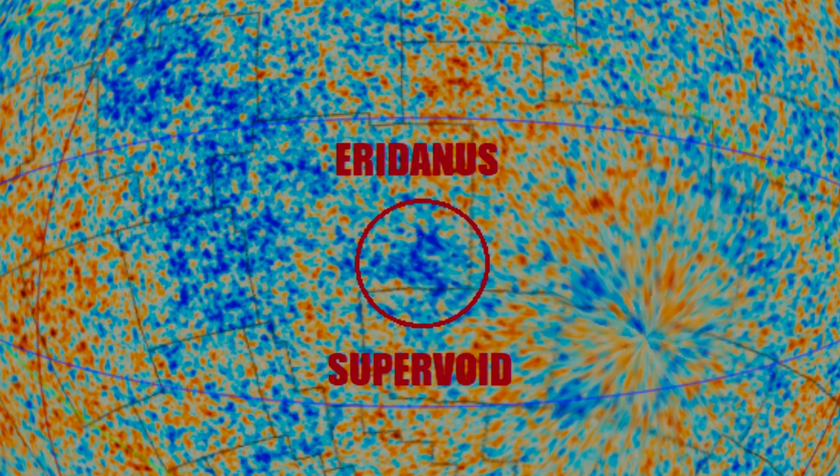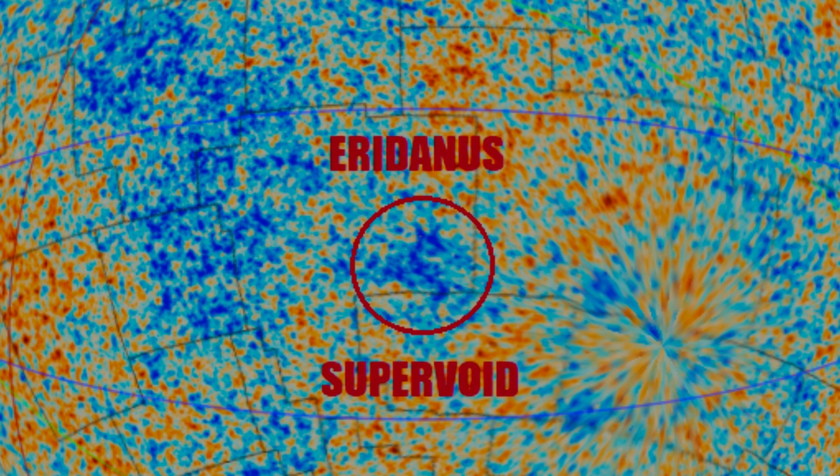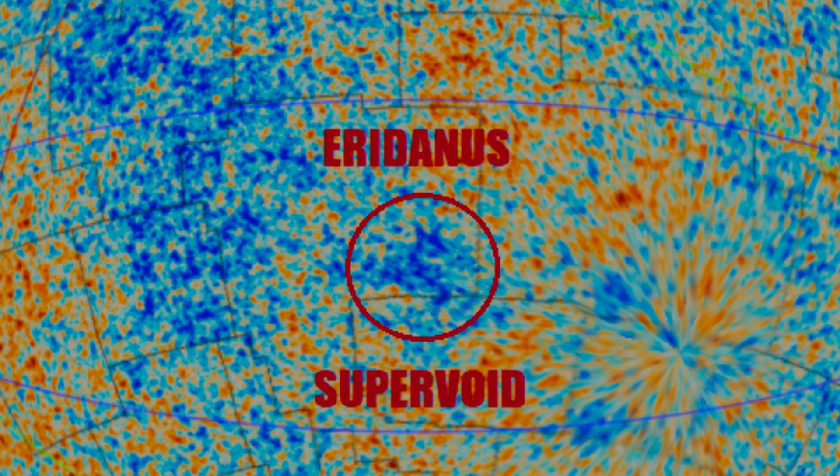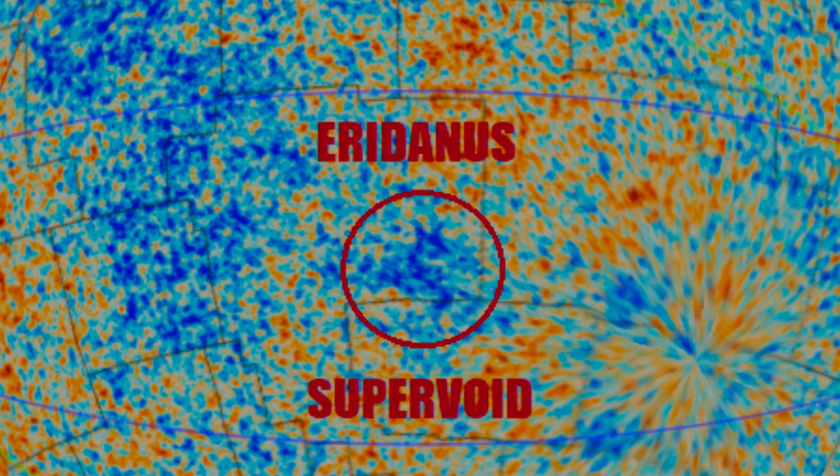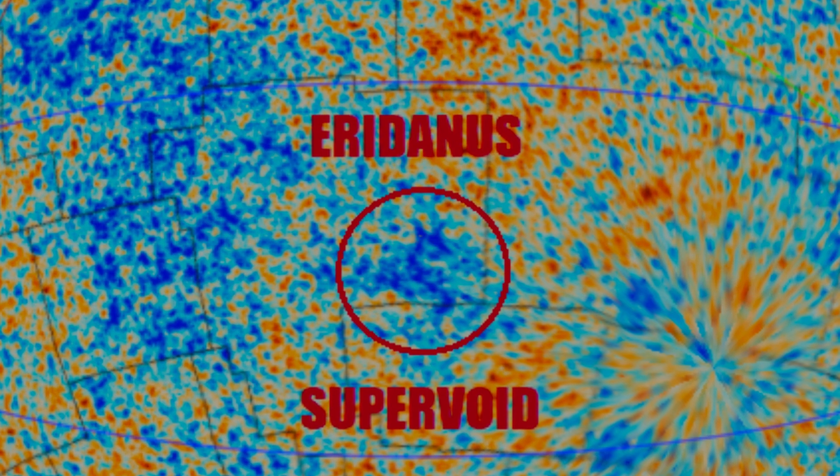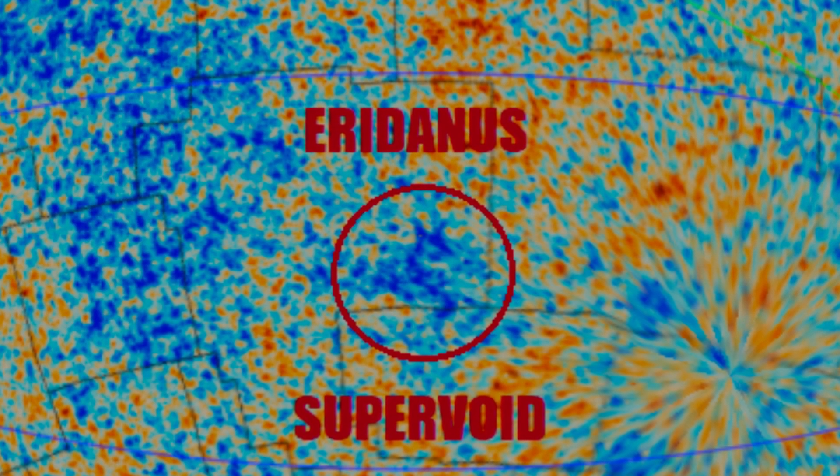The Eridanus supervoid, as the potential void located approximately 2 billion light-years away from us is called, if it indeed exists, is the largest empty region of space in our observable universe.